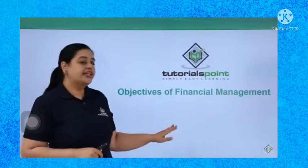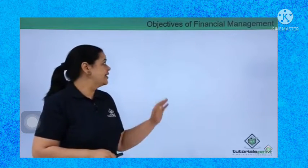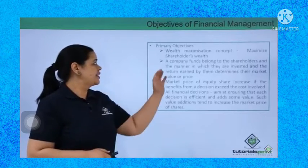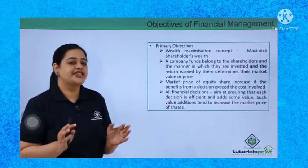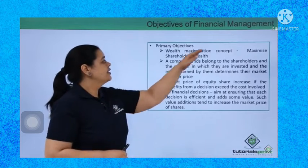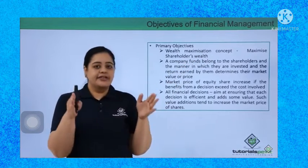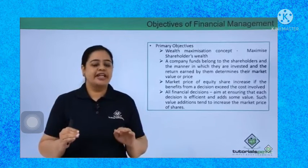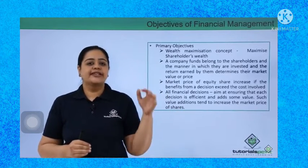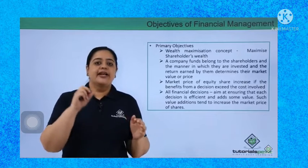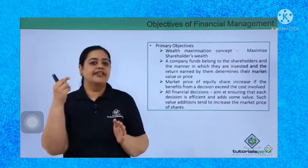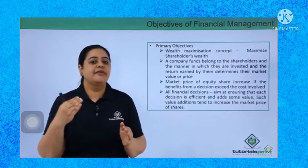Now let us understand the objectives of financial management. There are two objectives: the primary objective and the secondary objective. The primary objective of financial management is to maximize the wealth of the shareholders — that is, the wealth maximization concept. Ultimately, companies have raised money from the shareholders, so the company should have the goal of ensuring that the wealth is maximized.